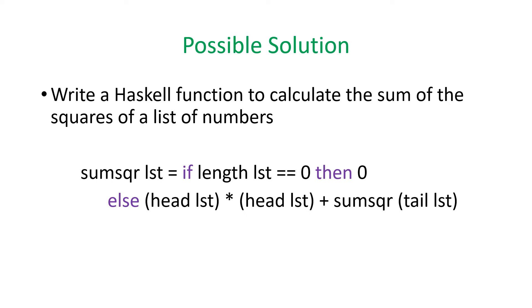A possible solution here is the sum square of the list equals if the list's length is zero, that's the base case, then we return zero. Zero is the length of an empty list. Otherwise, take the head and multiply it by the head to square that value and add it to the sum of the squares of the tail of the list, recursing on the sum square method with the tail.